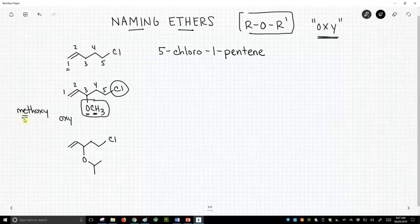So the meth is attached to the oxy, and then the oxy is attached to our pentene chain where? At the three position.